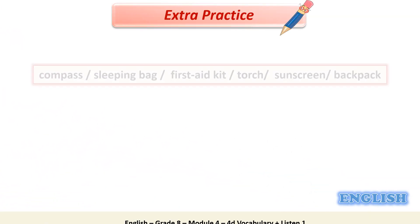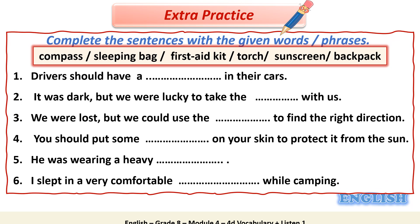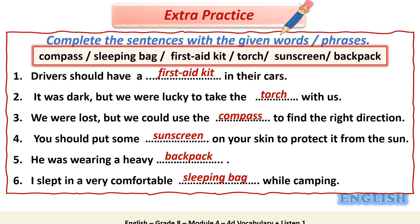Let's practice more. Complete the sentences below with the given words or phrases in the box, then check your answers with your teacher. Answers: 1. Drivers should have a first aid kit in their cars. 2. It was dark, but we were lucky to take the torch with us. 3. We were lost, but we could use the compass to find the right direction. 4. You should put some sunscreen on your skin to protect it from the sun. 5. He was wearing a heavy backpack. 6. I slept in a very comfortable sleeping bag while camping.